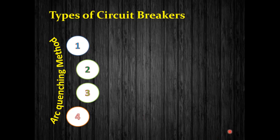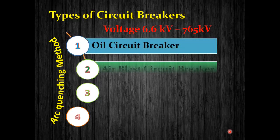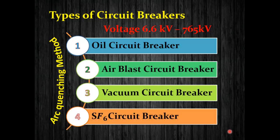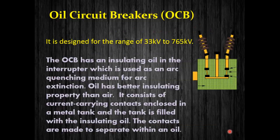Welcome to this video where we will learn about different types of circuit breakers for high voltage — voltage ranging between 6.6 kilovolts to 765 kilovolts. The main purpose of a circuit breaker is to open or break the circuit during a fault condition, and in that condition its purpose is to properly quench the arc produced during contact opening. Based on the arc quenching method, we have four different types: oil circuit breaker, air blast circuit breaker, vacuum circuit breaker, and SF6 circuit breaker.